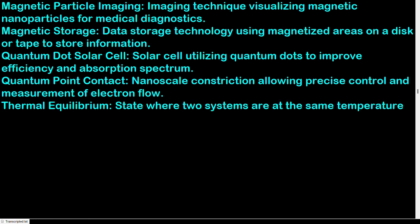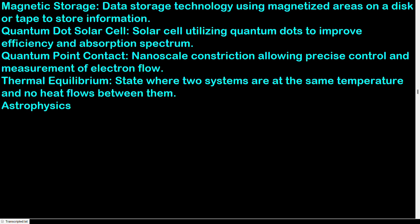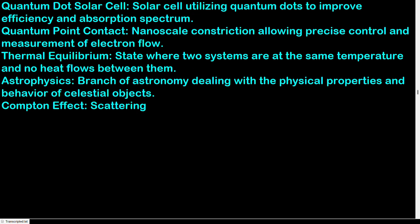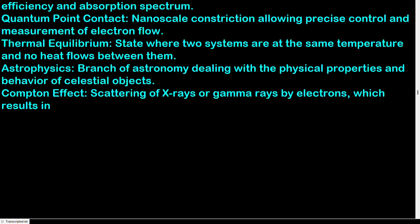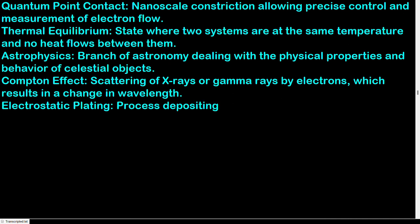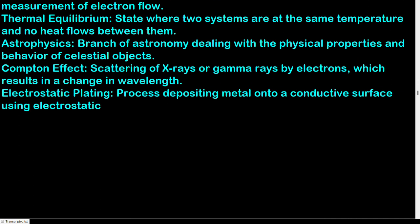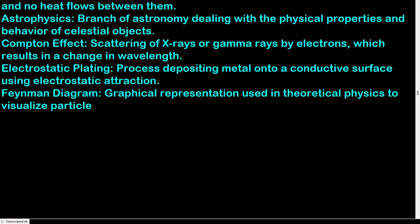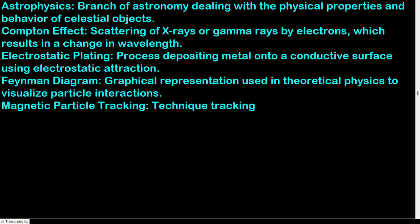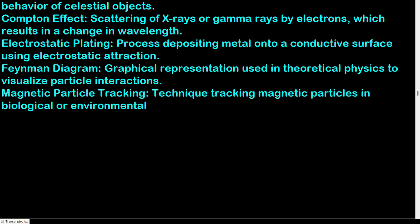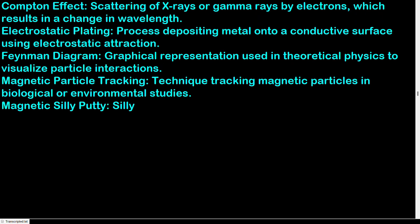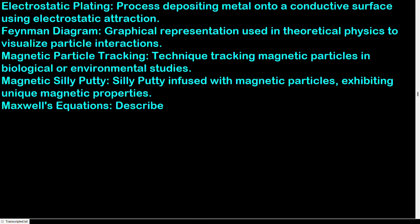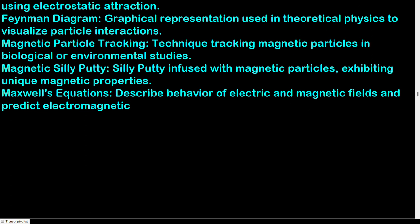Astrophysics: branch of astronomy dealing with the physical properties and behavior of celestial objects. Compton effect: scattering of X-rays or gamma rays by electrons, resulting in a change in wavelength. Electrostatic plating: process depositing metal onto a conductive surface using electrostatic attraction. Feynman diagram: graphical representation used in theoretical physics to visualize particle interactions. Magnetic particle tracking: technique tracking magnetic particles in biological or environmental studies. Maxwell's equations: describe behavior of electric and magnetic fields and predict electromagnetic waves.